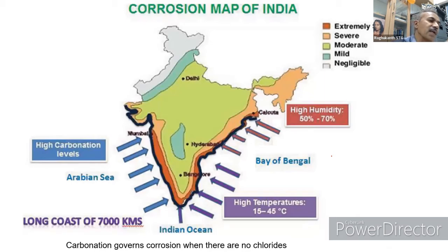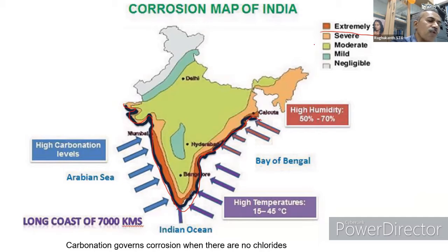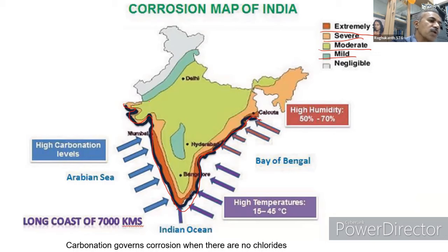This is a corrosion map of India. Maximum corrosion occurs along the sea coast — the Bay of Bengal, the Arabian Sea, and the Indian Ocean — shown in red, indicating extremely severe corrosion. As you move inland, it goes from severe to moderate to mild to negligible. The entire sea coast of India is more prone to corrosion.